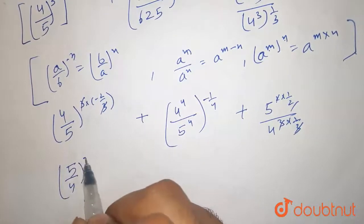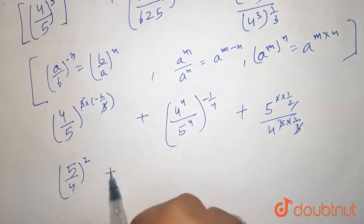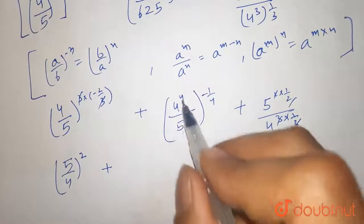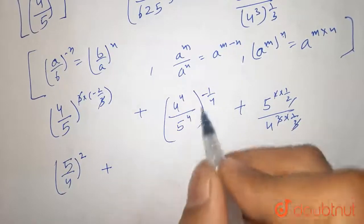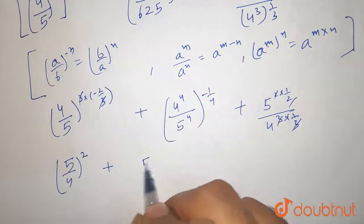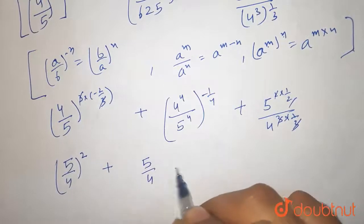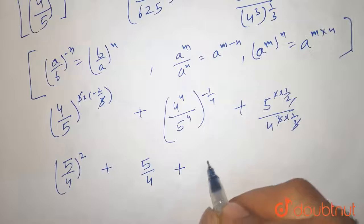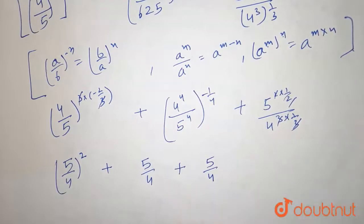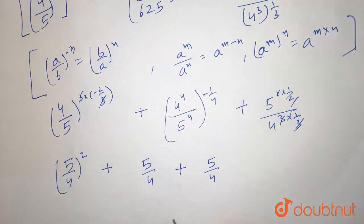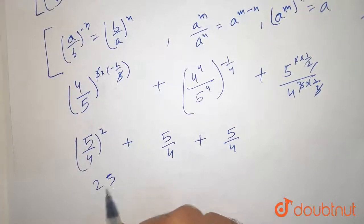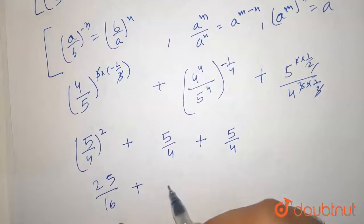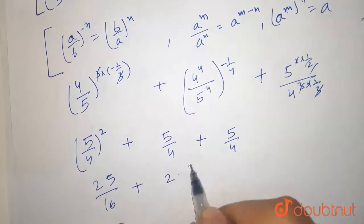This becomes 5 by 4 raised to the power 2, plus here 4 to 4 cancel out and the minus sign causes reciprocation, so this becomes 5 by 4, plus here it also becomes 5 by 4. So this becomes 25 by 16 plus 2 into 5 by 4.